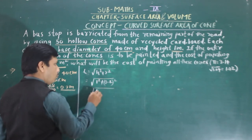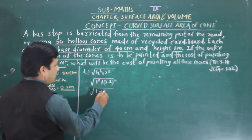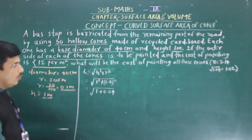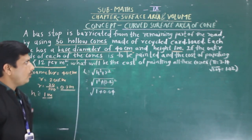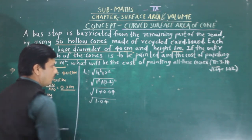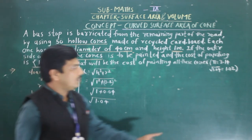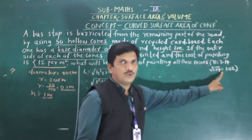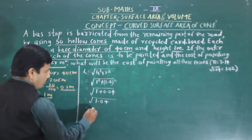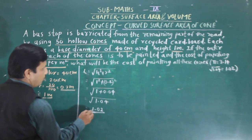So 1² is 1 plus 0.2² is 0.04. The addition of this will be 1.04. But here it is given that root 1.04 is equal to 1.02. So the slant height directly becomes 1.02 meters.